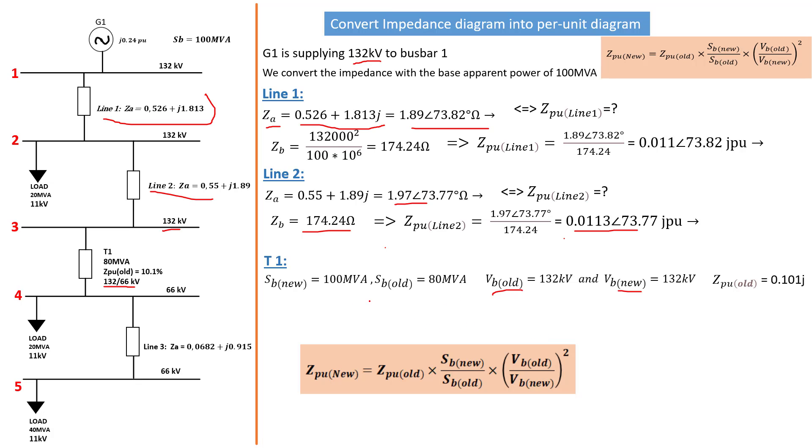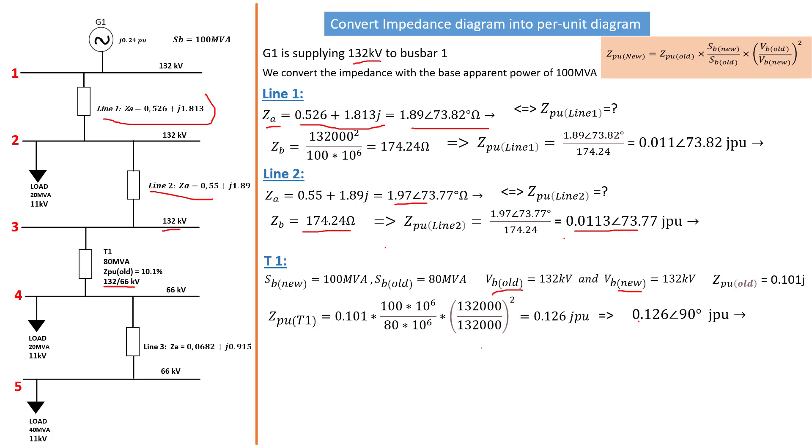Now we replace all the parameters into the Z per unit formulas. This gives us a Z per unit for the transformer of 0.126 J per unit. Converting into polar form gives us a magnitude of 0.126 with an angle of 90 degrees. The angle is 90 degrees precisely because the transformer is believed to be purely inductive, so the angle would be exactly 90 degrees lagging.